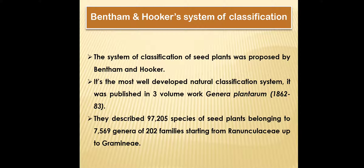These 97,205 species belonged to 7,569 genera and 202 families, starting from Ranunculaceae up to Gramineae. So it was a huge work completed from 1862 to 1883. The Ranunculaceae has been considered the most primitive family, whereas Gramineae has been considered to be the most advanced family.